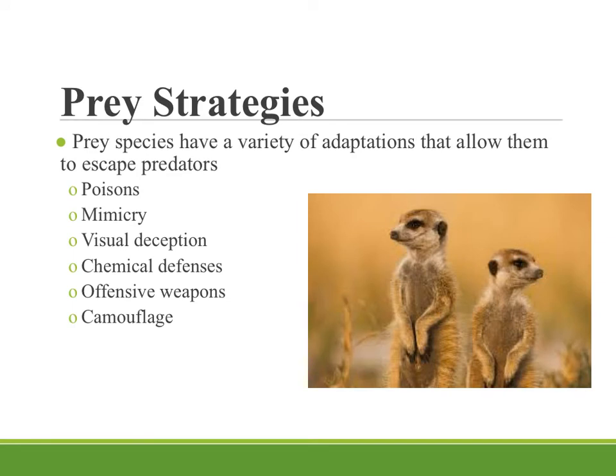Now, prey don't want to be eaten. They have a number of adaptations — things that are specific to those particular organisms that allow them to escape the predators. We're going to talk about six of those very quickly. You're probably familiar with many of these adaptations. Prey use poisons and mimicry, they have ways to deceive the predators so they can't be seen, they have chemical defenses or offensive weapons on their own bodies, and also use camouflage.